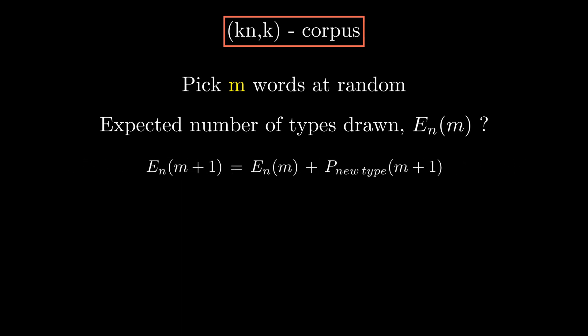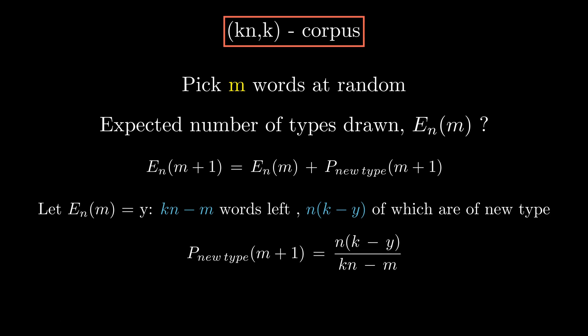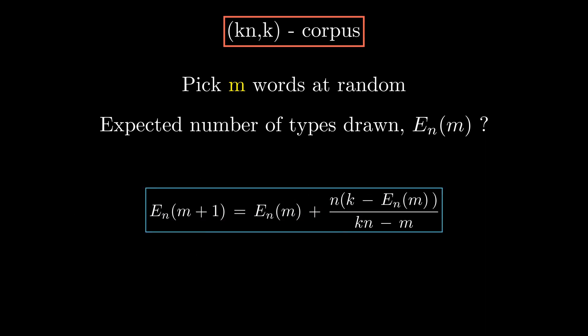If we got y types after picking m tokens, there are kn minus m tokens left, and k minus y of which are of type not yet drawn. Using the basic definition of probability, we can write, and thus, so this is what our recursion looks like now. How good is it in practice?